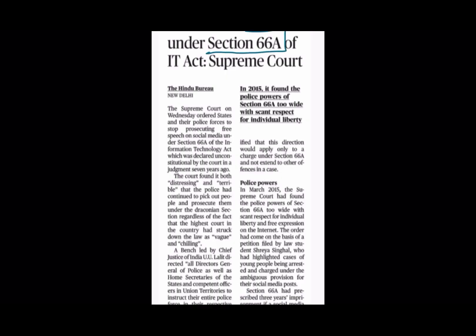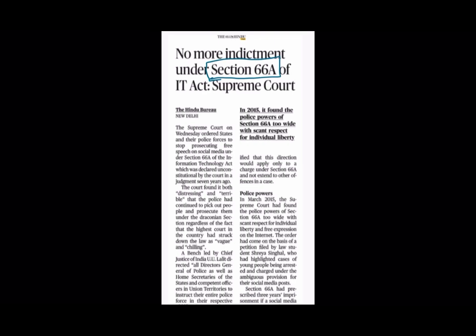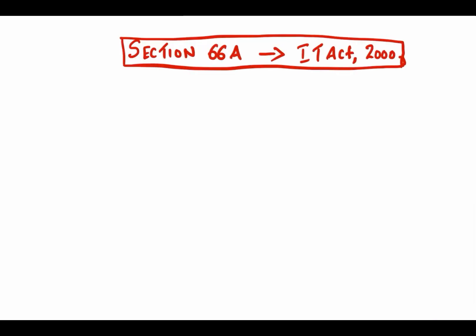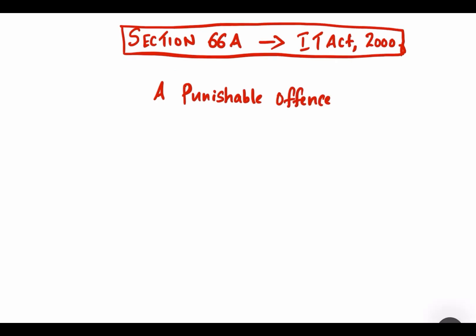The next article covers Section 66A of the Information Technology Act, which the Supreme Court has declared unconstitutional. Section 66A makes it a punishable offense for any person who sends grossly offensive or threatening information using a communication device or a computer resource.